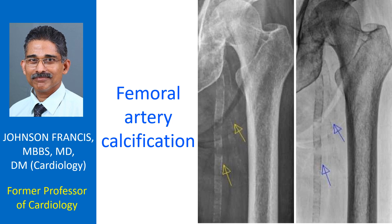Extensive calcification is seen extending from the common femoral artery into the superficial femoral artery and profunda femoris artery. Arterial calcifications are more likely to be seen in the elderly and in those with altered calcium metabolism, as in chronic kidney disease and hyperparathyroidism.